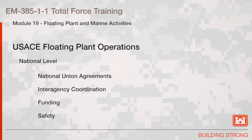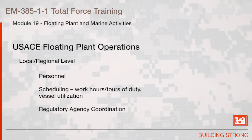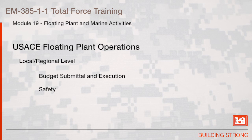U.S. Army Corps of Engineers floating plant operations have both national level and local and regional level interests. Interests at the national level include national union agreements, interagency coordination, funding, and safety. Interests at the local and regional level include personnel, scheduling to include work hours and tours of duty, vessel utilization, regulatory agency coordination, budget submittal and execution, and safety.